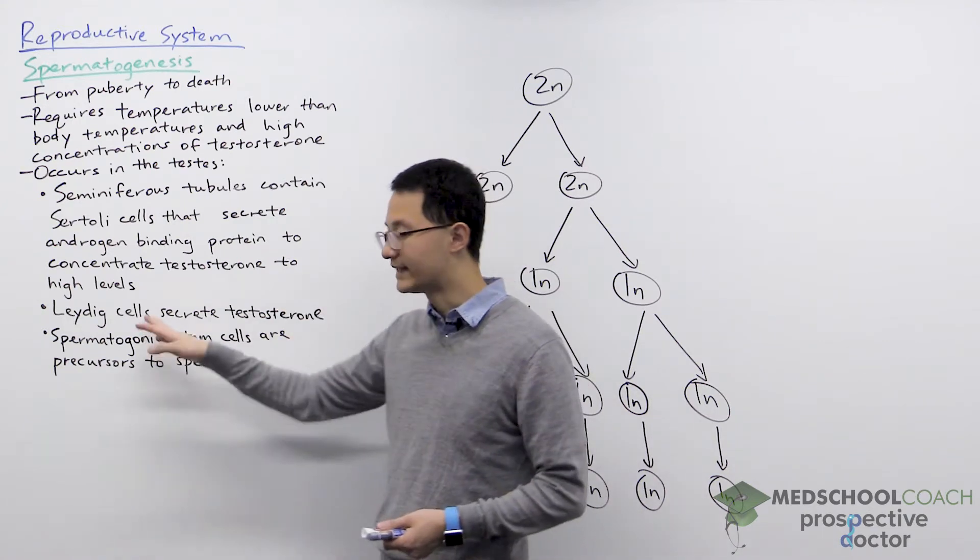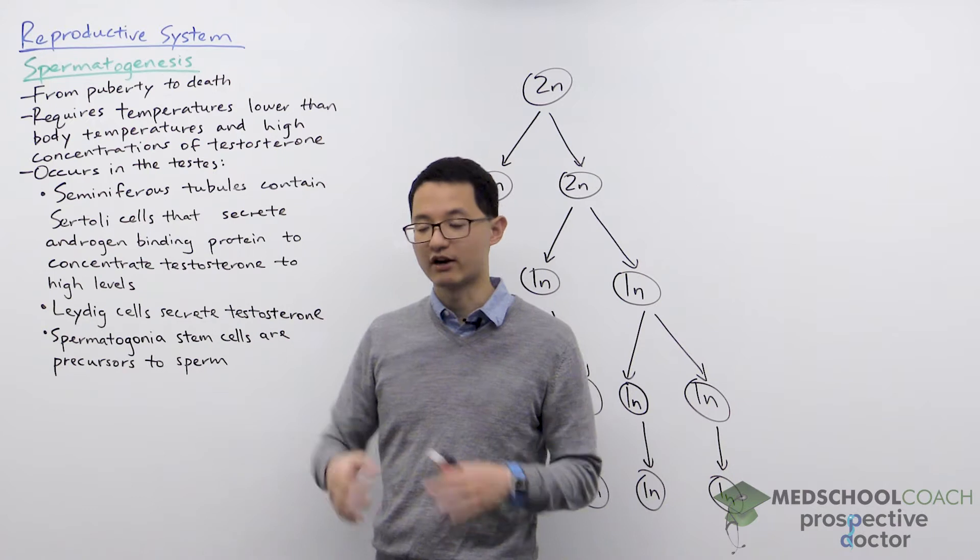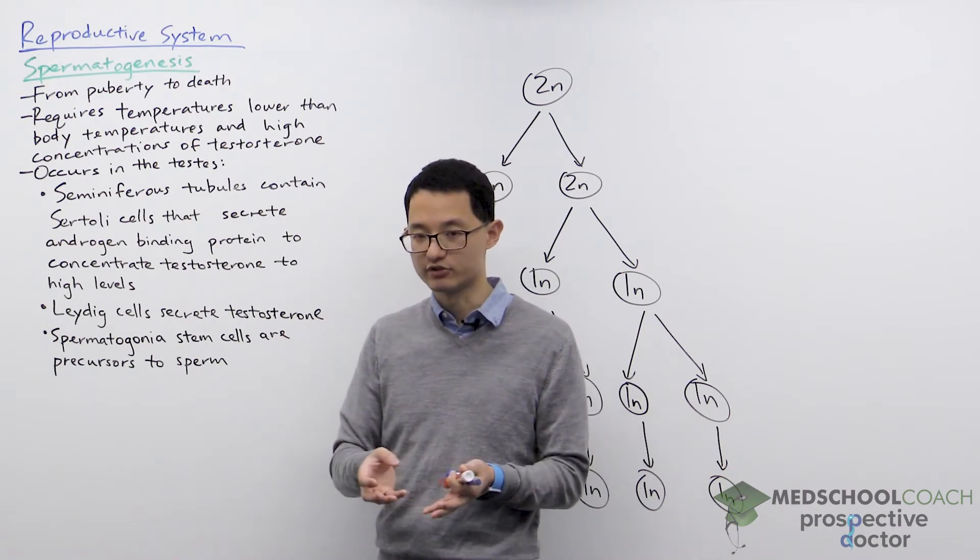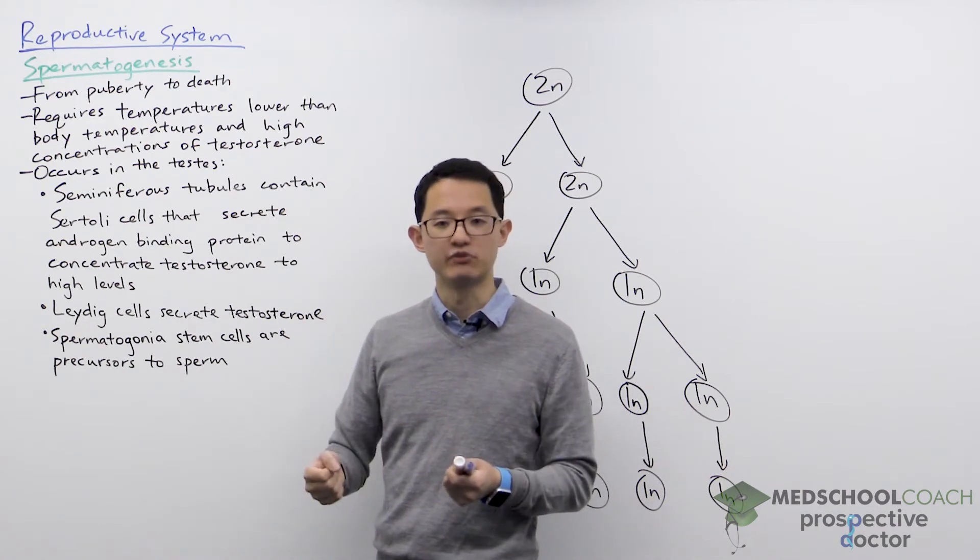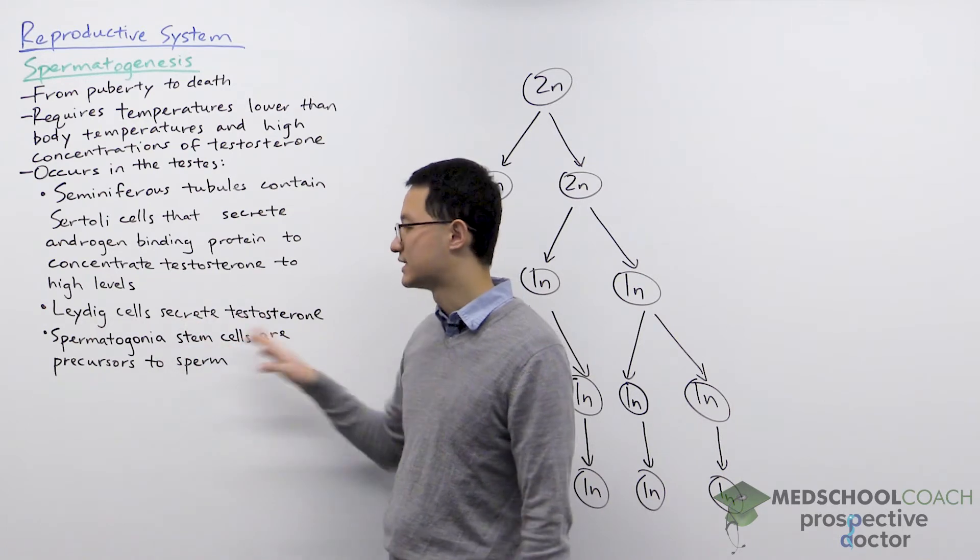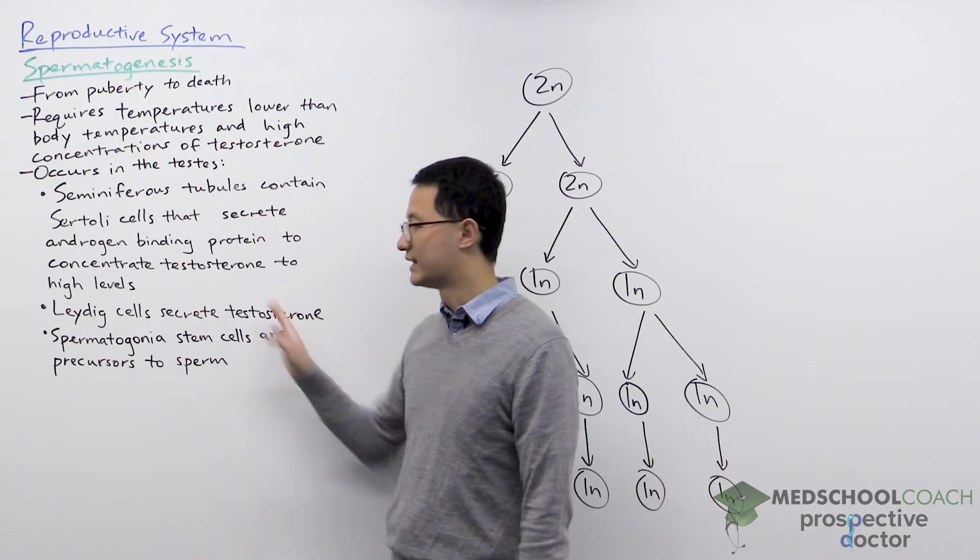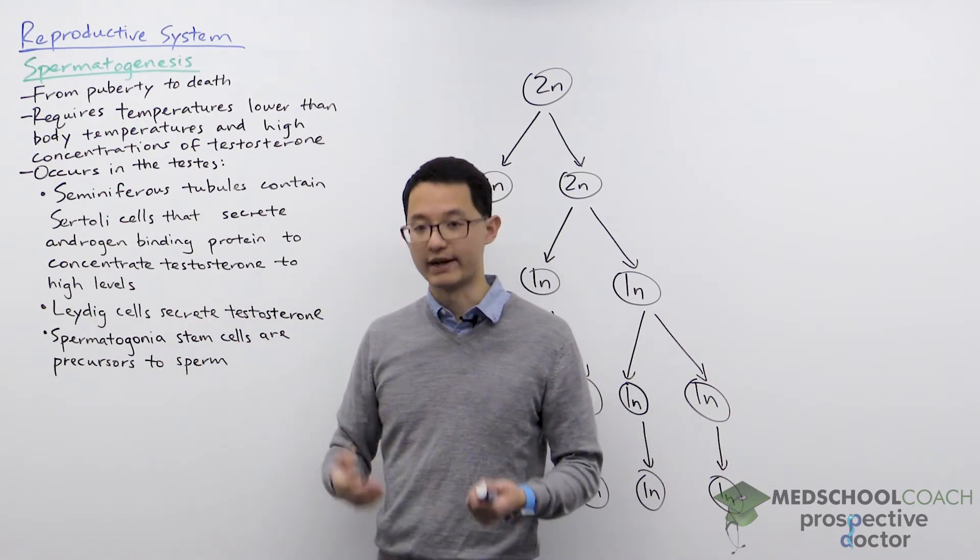There are also Leydig cells, which are also called interstitial cells. They aren't part of the seminiferous tubules but are essentially scattered in between them. These Leydig cells secrete the testosterone that the androgen binding protein is binding to.